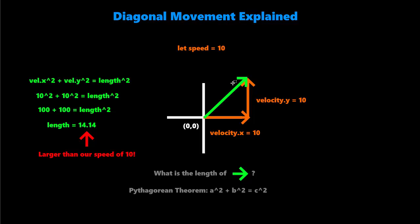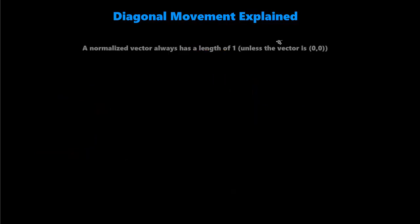So then we brought in that vector stuff to help fix this. And we did something called normalizing. And a normalized vector will always have a length of 1. Unless the vector was 0 to begin with, then usually the implementation just keeps it at 0.